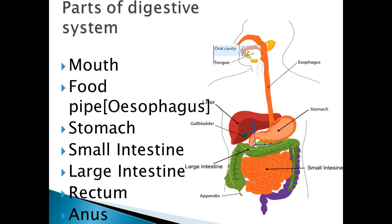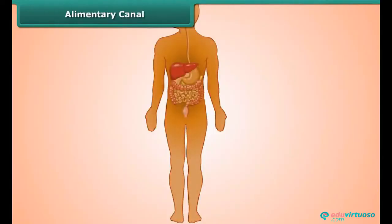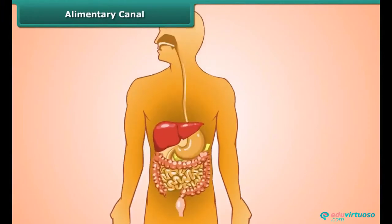The different parts of the digestive system are mouth, food pipe or esophagus. Esophagus leads to stomach, stomach leads to small intestine, small intestine leads to large intestine, large intestine leads to rectum, then anus. You will be wondered to know that the food inside our body passes through an alimentary canal or simply digestive tract.